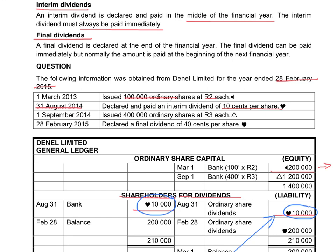On 1 September, the company decided to issue additional shares at R3 each — 400,000 shares at R3 each. That means capital increases by R1,200,000. Adding the R200,000 from the previous year, total capital is now R1,400,000. That is the total money obtained from shareholders to provide capital for the company. It is very important to determine how many shares were issued to obtain that R1,400,000 — we have already sold 500,000 shares in total, because when we declare a dividend again, we work it out on the number of issued shares.